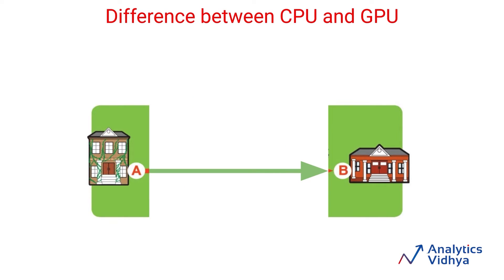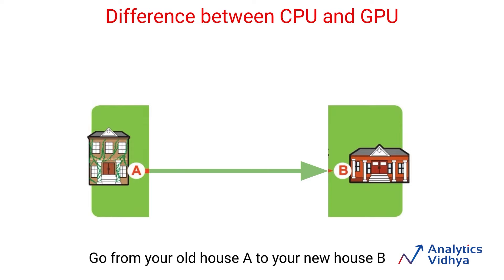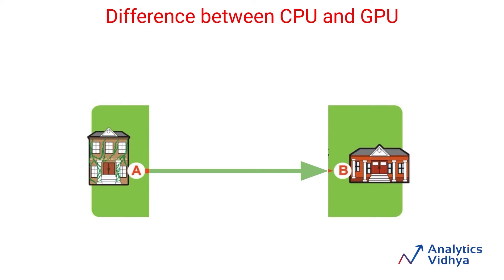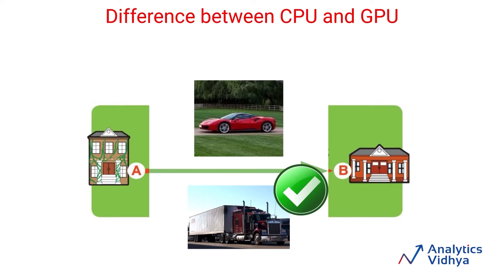Now let us consider another scenario. Let us say A happens to be your old house and B happens to be your new house, and you need to move all of your stuff from house A to house B. You again have the same two options. Which option would you choose now? In all likelihood, the freight truck is a better option. Because if you choose the Ferrari — which you can do theoretically — it will end up taking a lot of trips and obviously a lot of time and fuel to move all your stuff. A truck is a much better option to do this move.